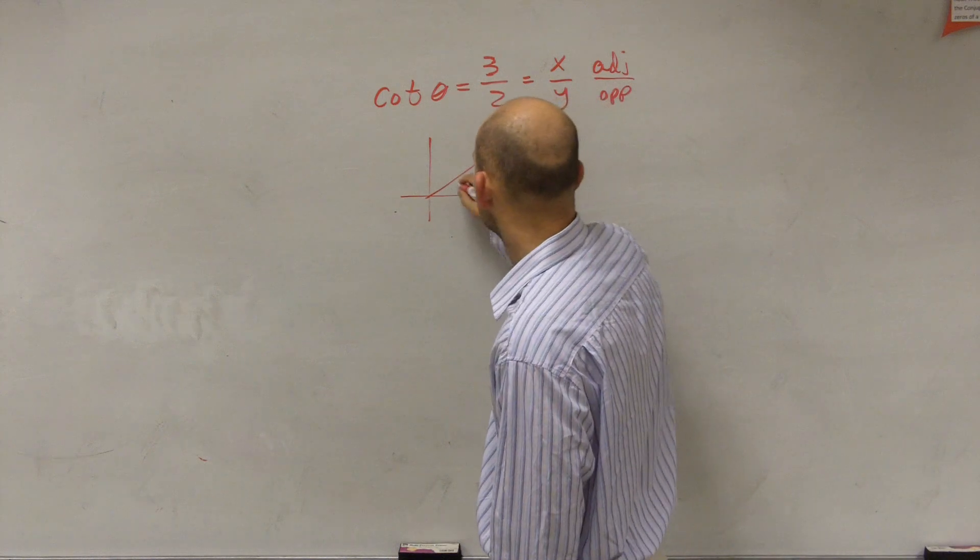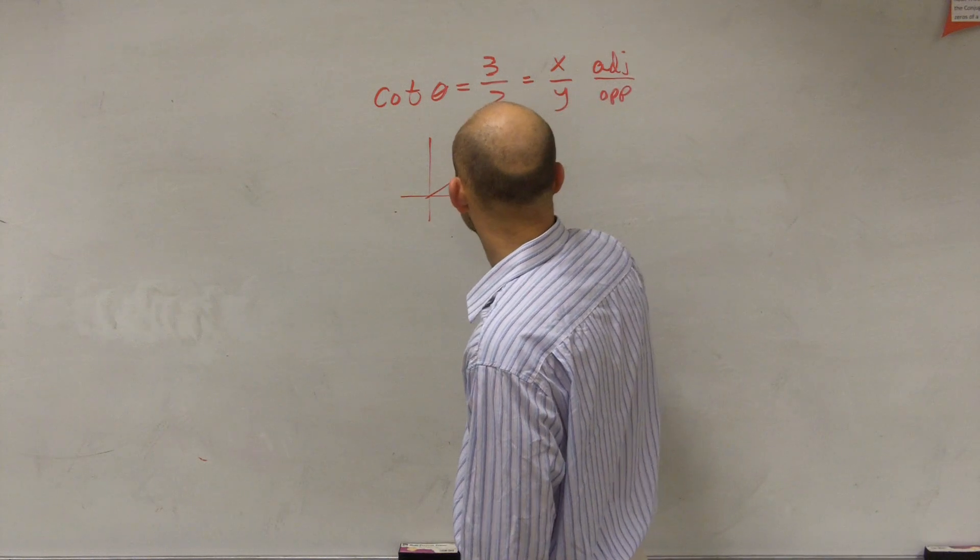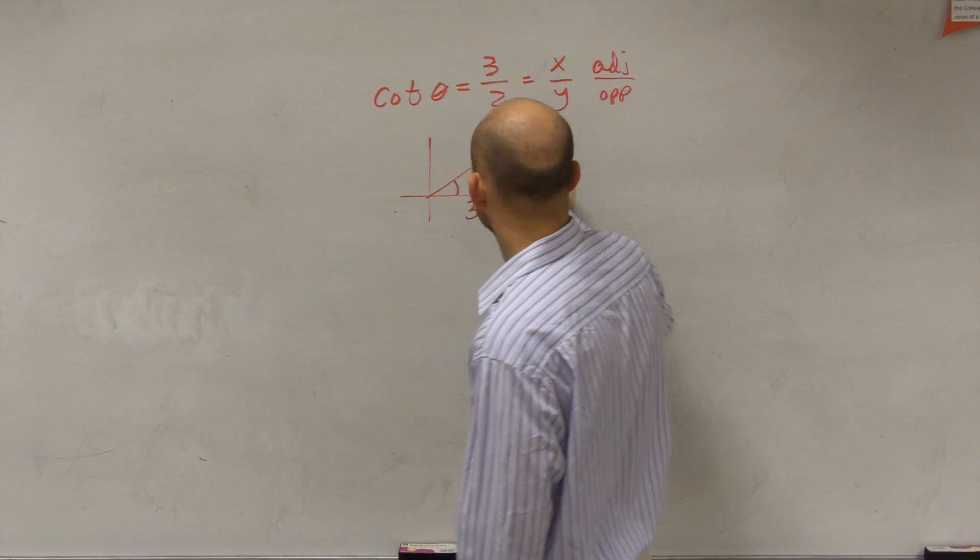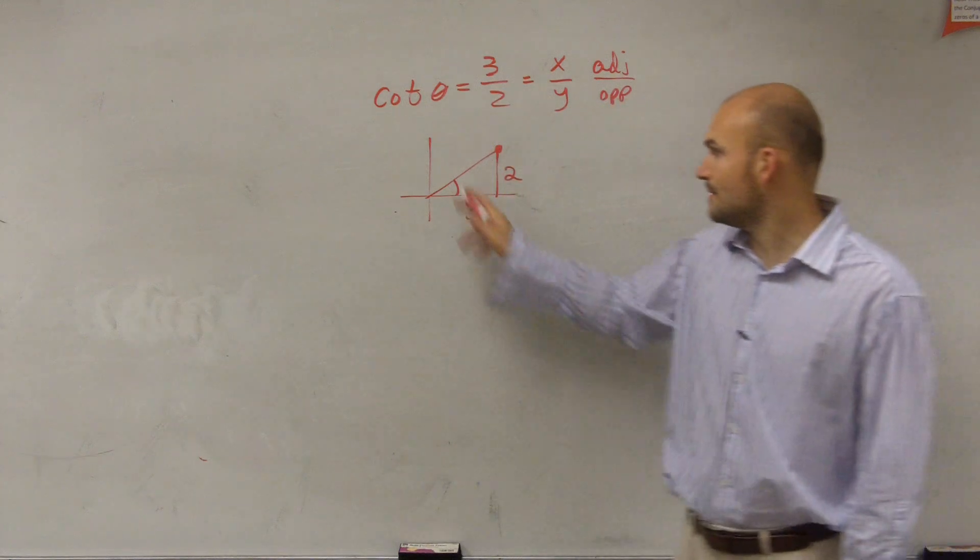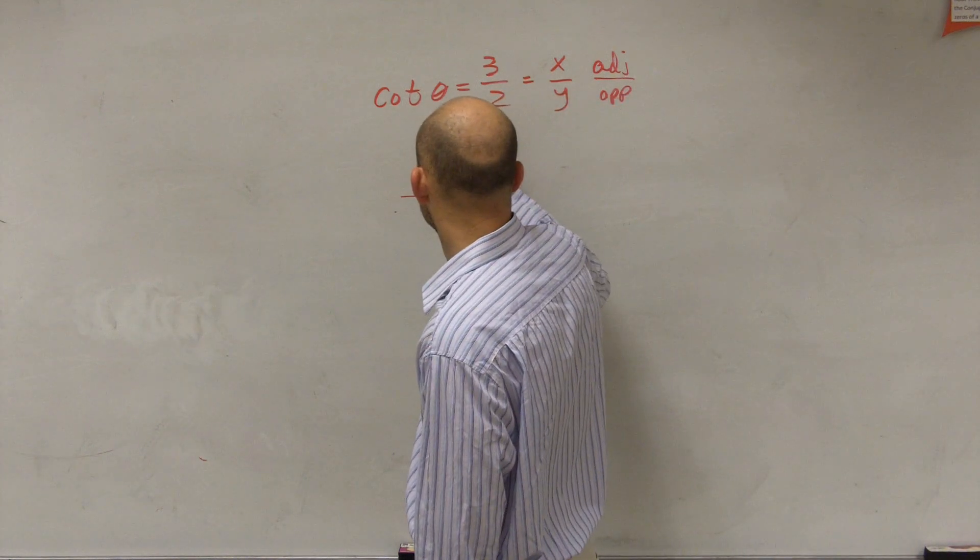By creating a triangle, I could say that this distance, which is your adjacent, is 3, and this is 2. Then by using the Pythagorean theorem, I get this point is going to be square root of 13.